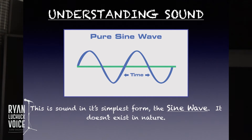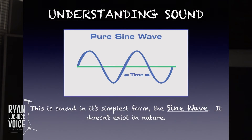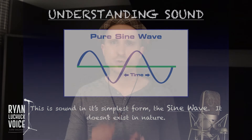So this is sound in its simplest form. It's called the sine wave. This drawing that we're looking at is actually two oscillations back and forth, and sine waves travel that way — back and forth. I want to make it clear that the pure sine wave doesn't really exist in nature, but this helps us understand sound.